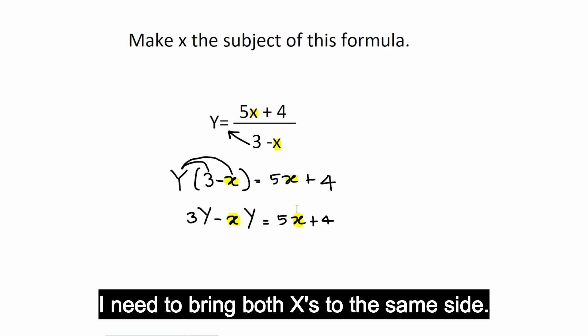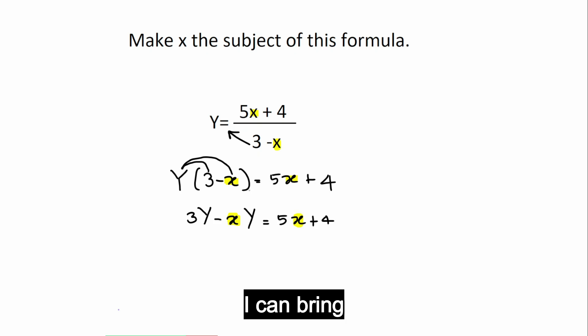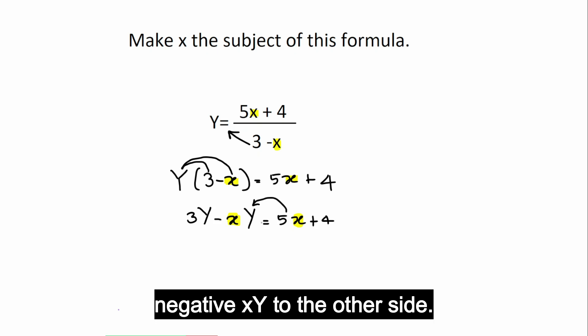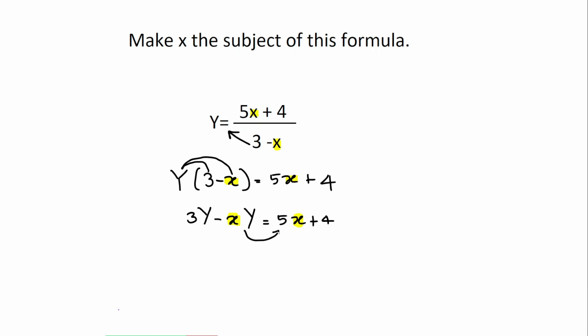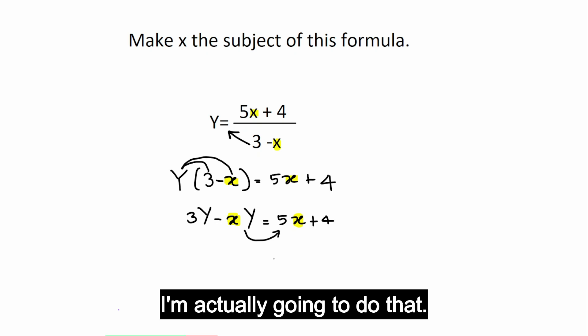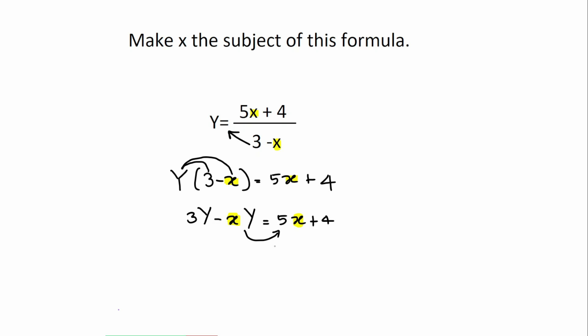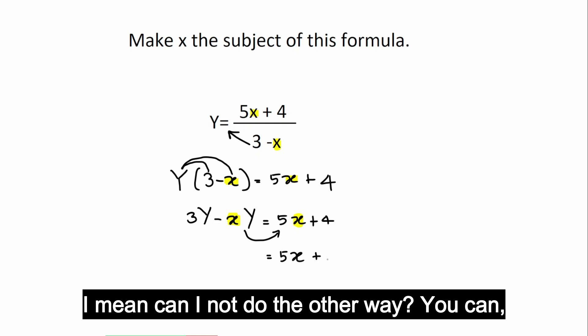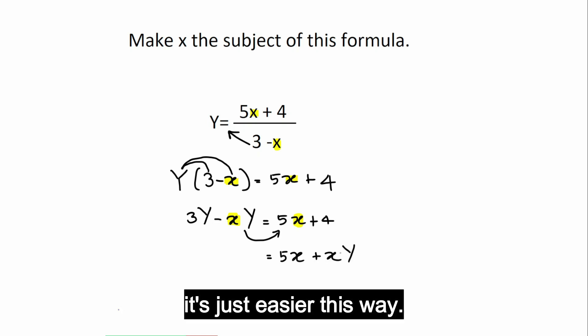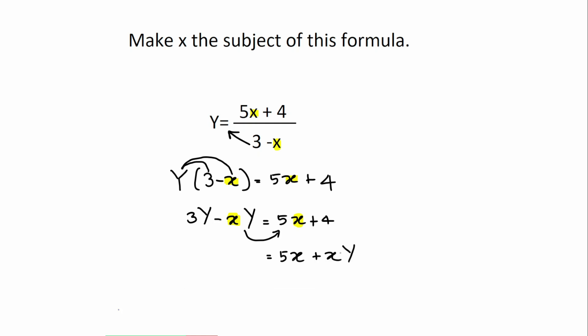Now, I need to bring both x's to the same side. I can bring 5x to this side or I can bring this negative xy to the other side. I'm actually going to do that. The reason is, when I do that, I get both positive, which makes my life easier. Can I not do the other way? You can. It's just easier this way.